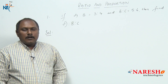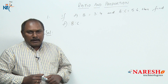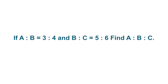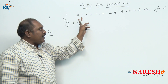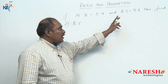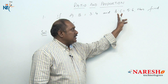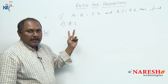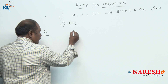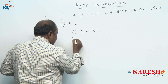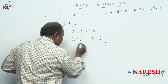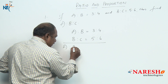Let us look into a simple example. If A is to B equals 3 is to 4, and B is to C equals 5 is to 6, then find A is to B is to C. Here we are comparing A and B — if A is 3, B is 4. And comparing B and C — if B is 5, C is 6. We are asked to find what is A is to B is to C.